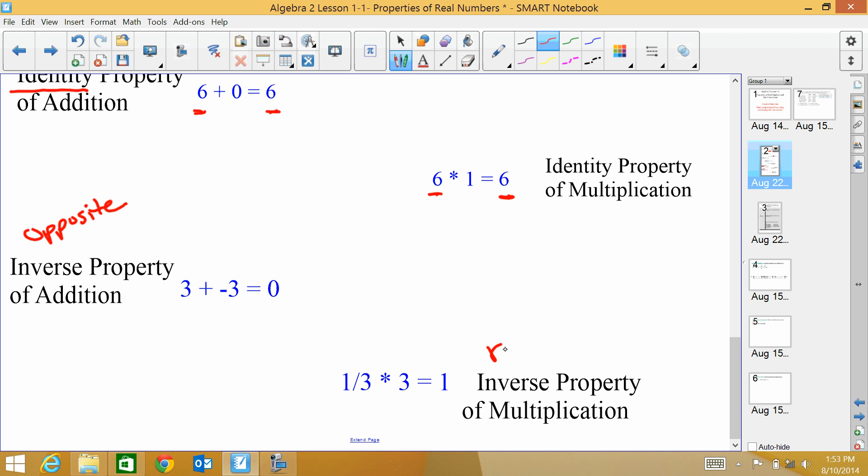Then for multiplication, inverses are reciprocals. So reciprocal is when you take a fraction and you flip it over. So for example, the reciprocal of 1 third is 3. Because if I flip it over, I would have 3 over 1. So when I multiply reciprocals, it equals 1. So that's inverse property of multiplication because those are like opposites in multiplication.